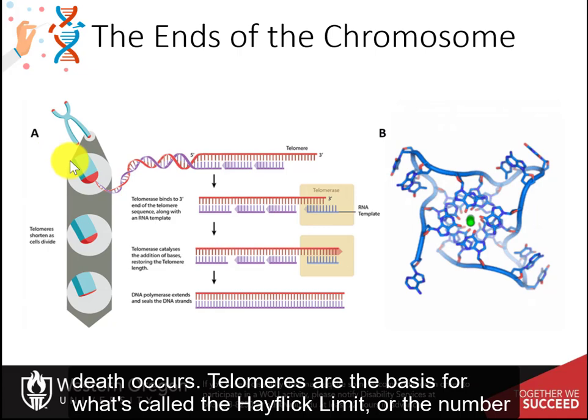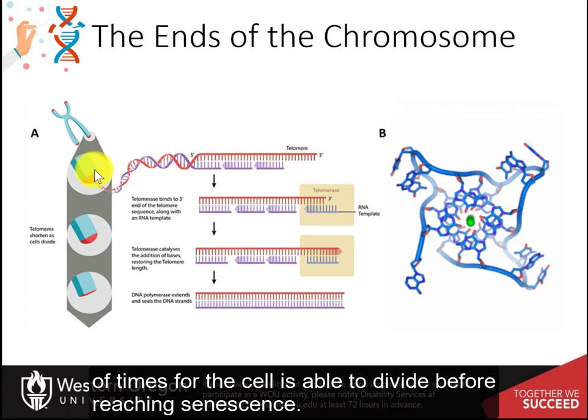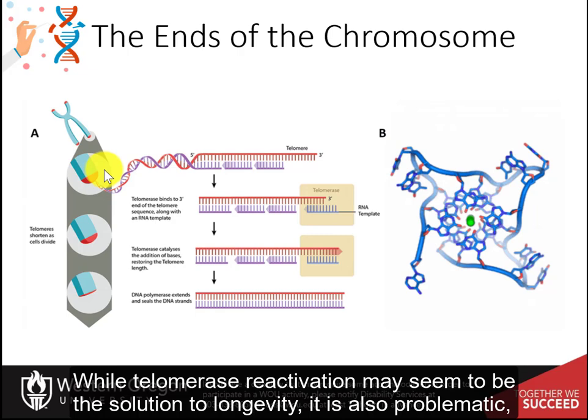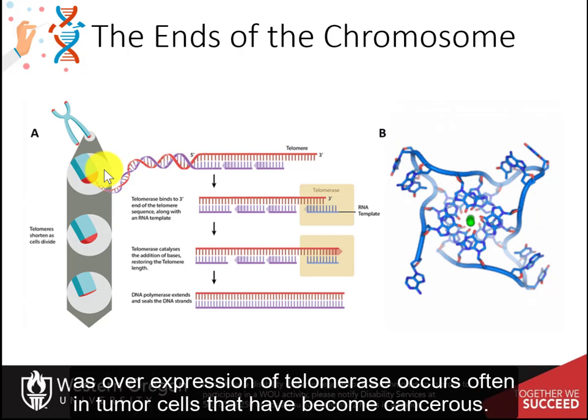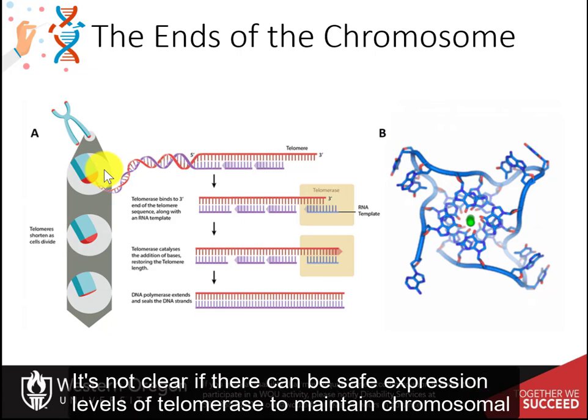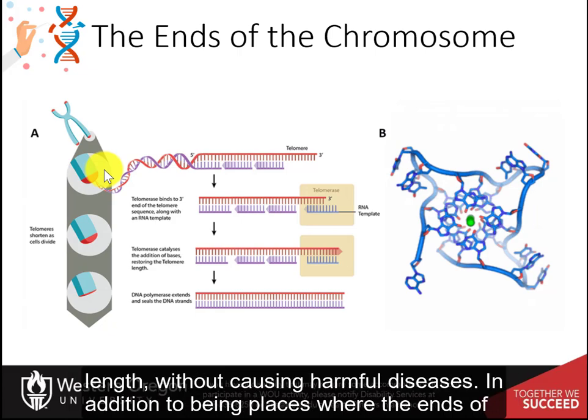Telomeres are the basis for what's called the Hayflick limit, or the number of times that a cell is able to divide before reaching senescence. While telomerase reactivation may seem to be the solution to longevity, it is also problematic, as overexpression of telomerase occurs often in tumor cells that have become cancerous. It's not clear if there can be safe expression levels of telomerase to maintain chromosomal length without causing harmful diseases.